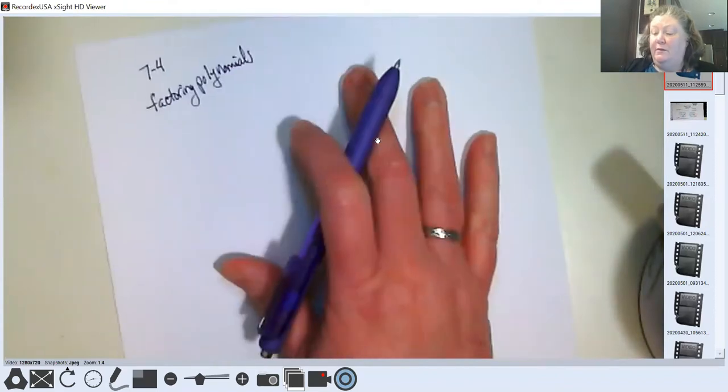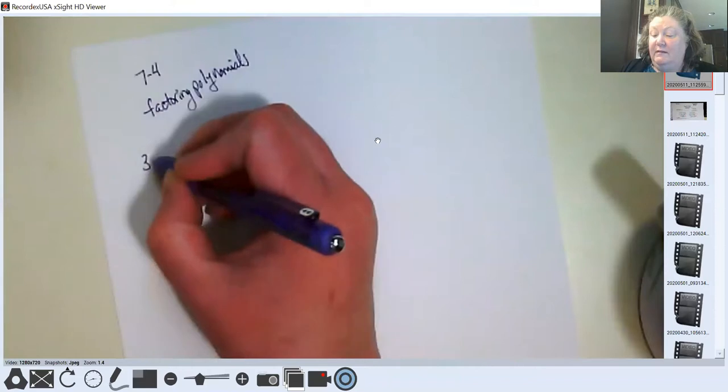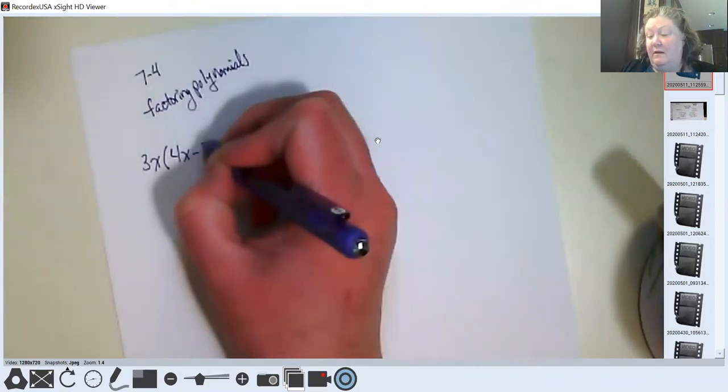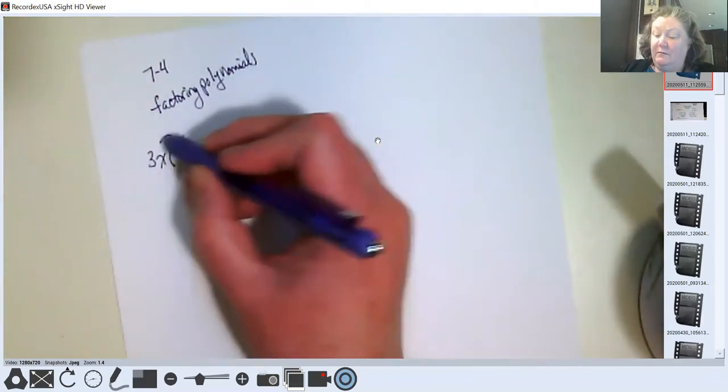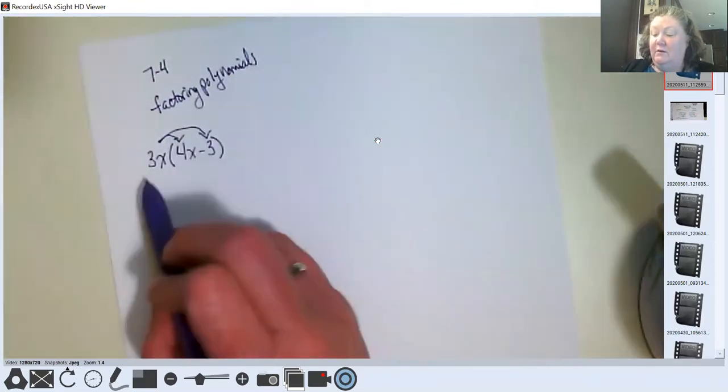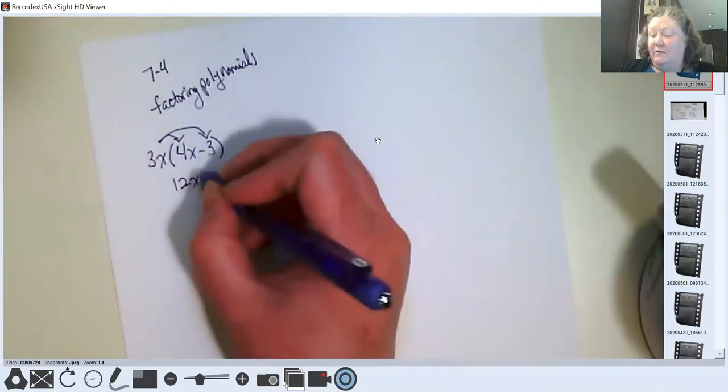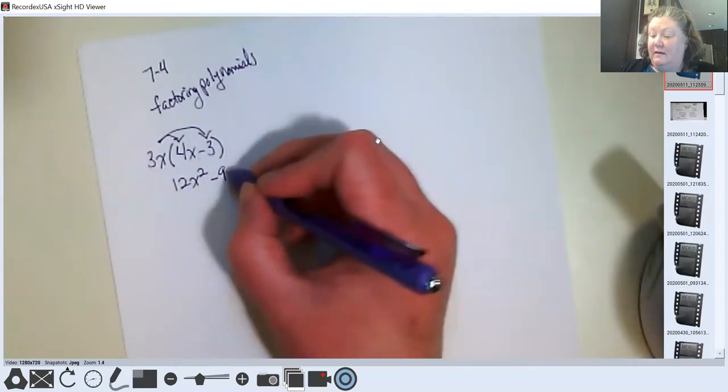Before we do, I want to do a quick reminder of some of the things that we've already done. We've done things like 3x times 4x minus 3, and we've done it in a couple of ways, where you can just distribute and show that 3 times 4 is 12, and x times x is x squared, and 3x times negative 3 would be negative 9x.